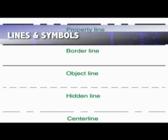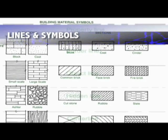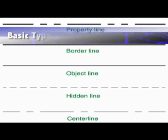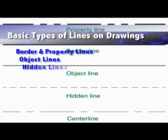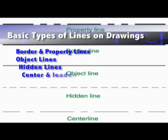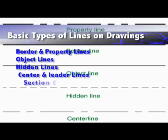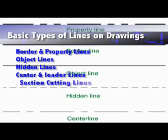Lines and symbols from Unit 4 in the book: lines, symbols, and pocheing are the alphabet to the print reading language. The basic lines found on drawings are border and property lines, object lines, hidden lines, center and leader lines, and section cutting lines.